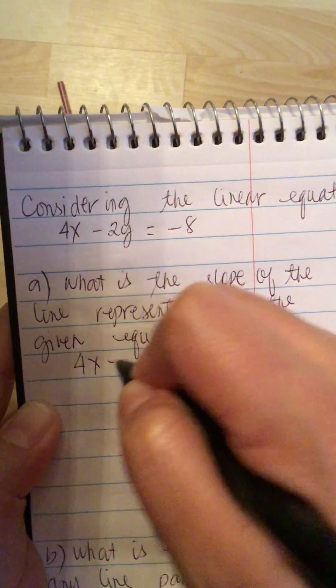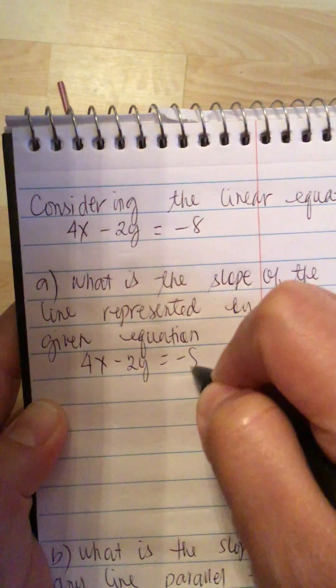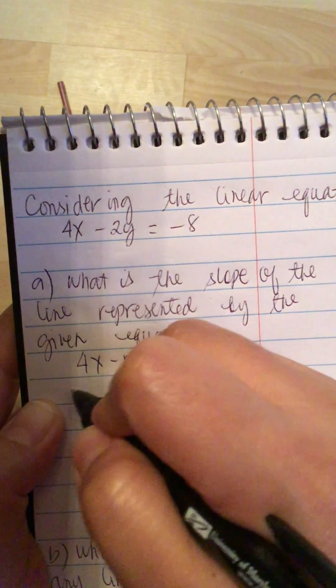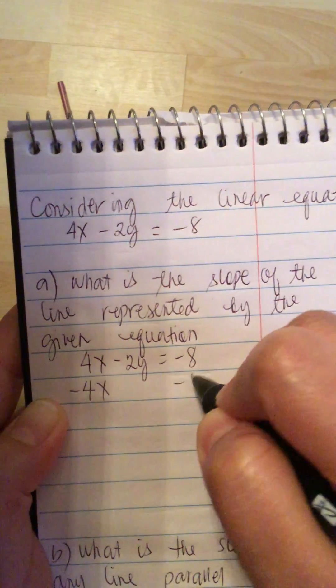So we have 4x minus 2y is equal to negative 8. So we subtract 4x from both sides.